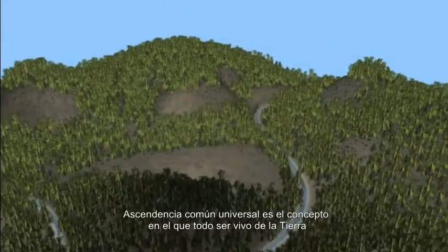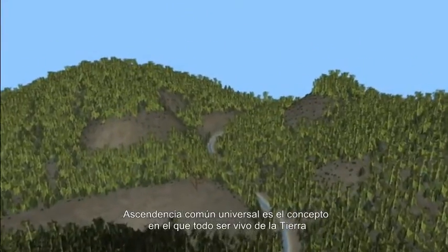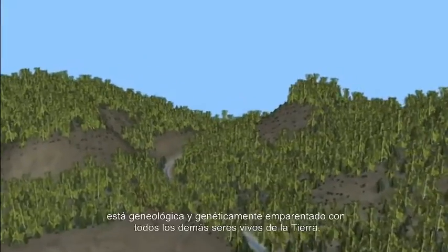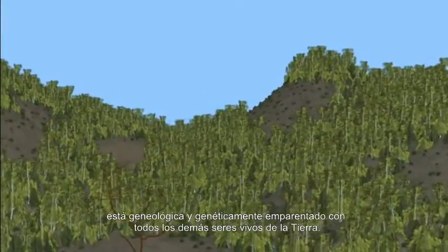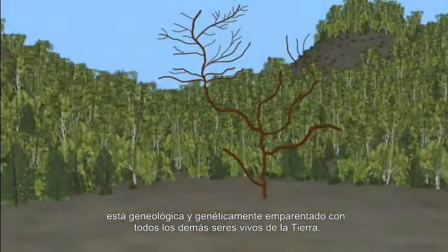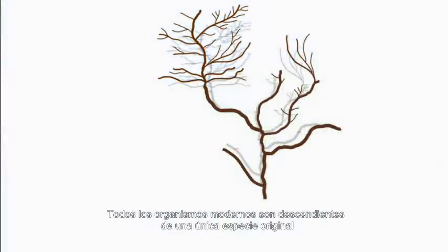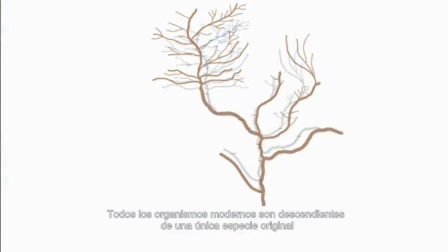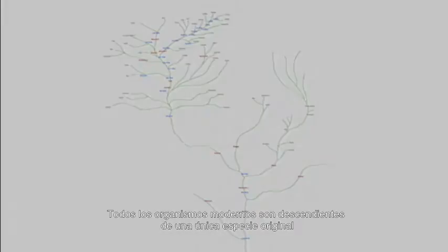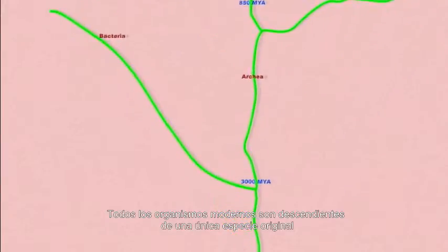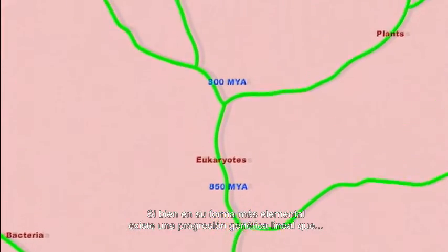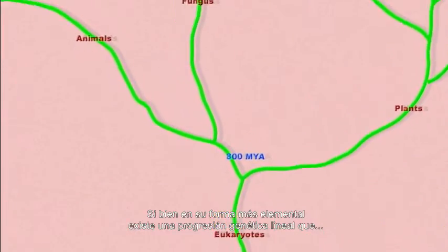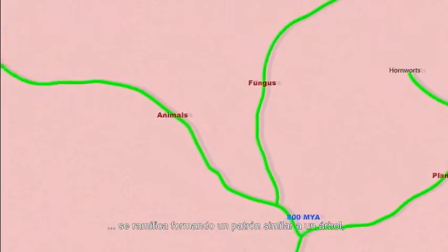Universal common descent is the concept that every living thing on Earth is related to every other living thing on Earth — genealogically, genetically related. All modern organisms are descended from one original species. And while in its simplest form, there is a genetic linear progression that branches and forms a tree-like pattern.